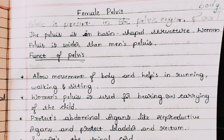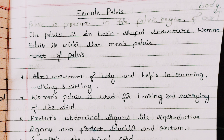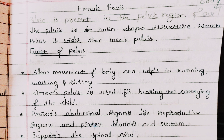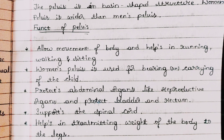The female pelvis is basin-shaped, and when you compare the female pelvis and the male pelvis, the female pelvis is a bit wider. This is because the female pelvis is used in the process of delivery — giving birth to the baby — so the female pelvis is wider than the male pelvis.